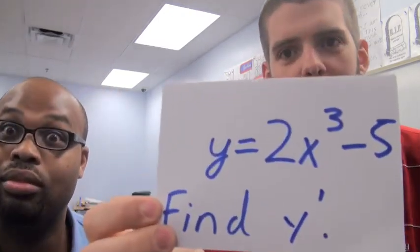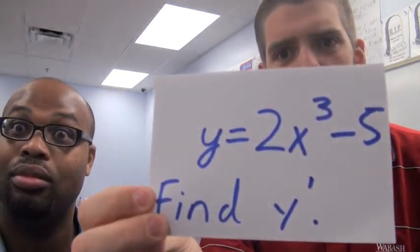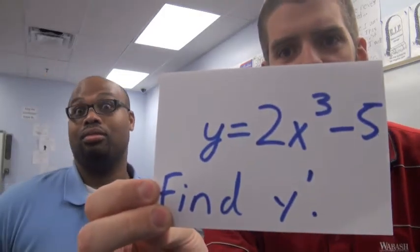Mr. Jones, let's go ahead and use this and learn some calculus while we do it. Well, all right, Mr. Stipes. All right, our first step is to write the problem on the front. So here we have our problem. y equals 2x cubed minus 5, and we are going to find y prime or the derivative of y.